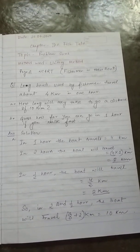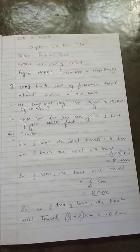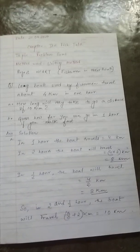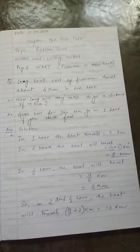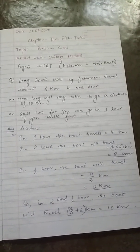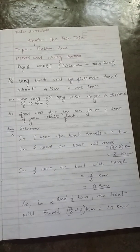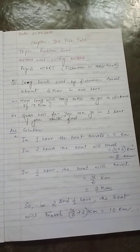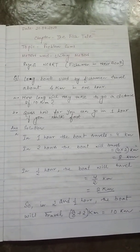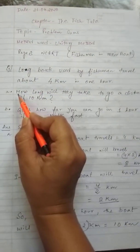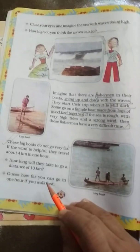Fishermen use different types of boats. They use boats made up of logs of wood. Now if a boat is made up of simple logs of wood tied together and the sea is rough with high tides and strong wind, then these fishermen have a very difficult time. So let's take the first question related with log boats. That is in your page number 6 of your NCERT. You will go to your NCERT page and you will get this question.